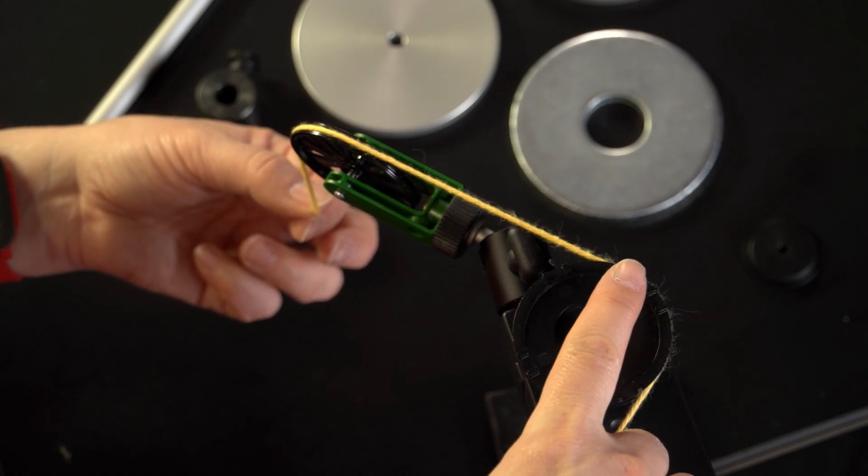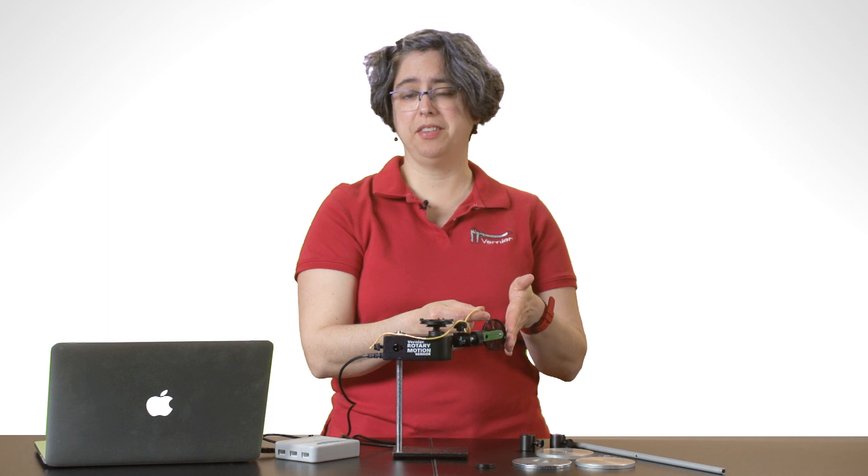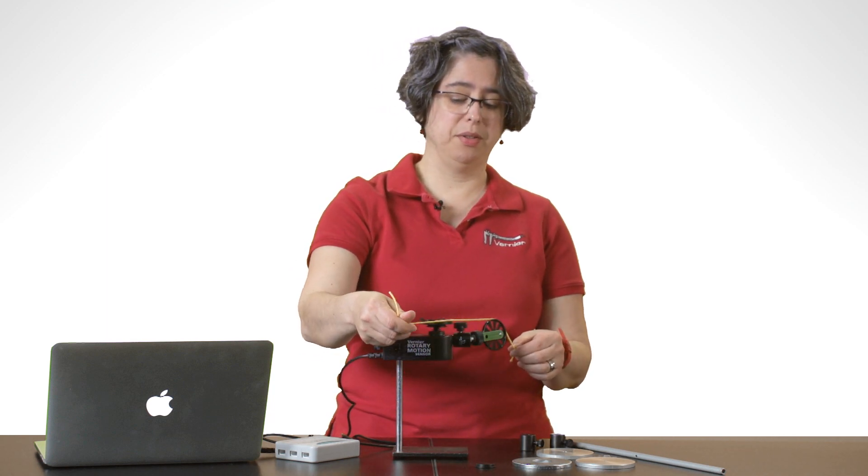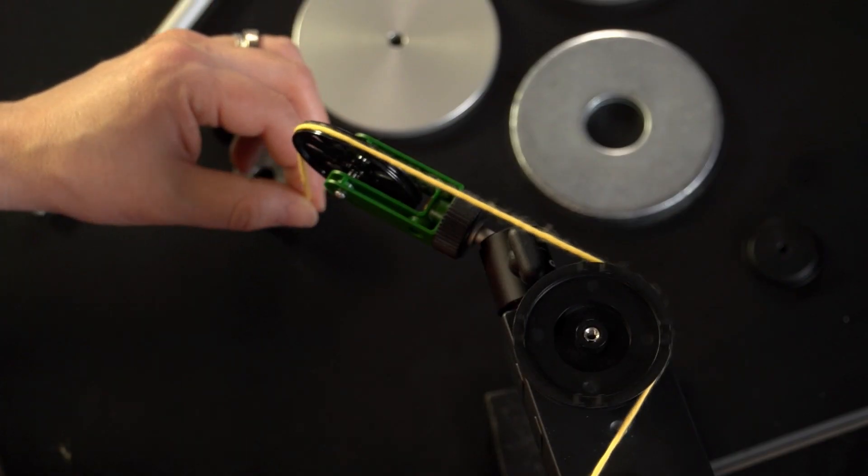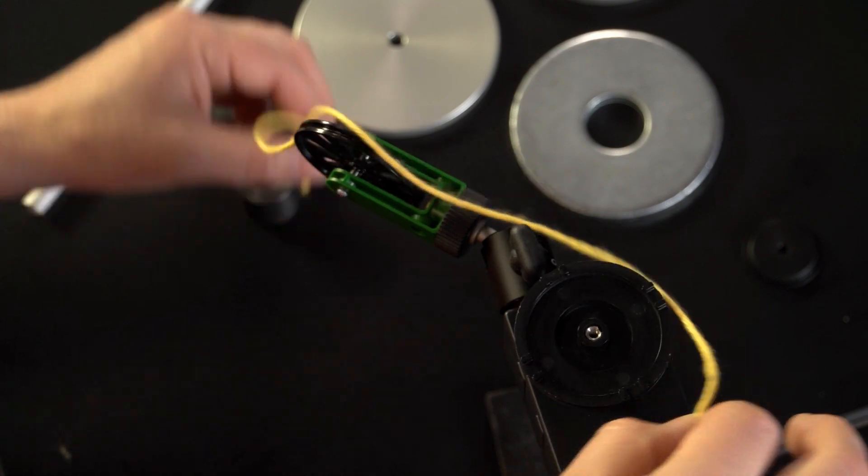And there we are. So now I know that if I have a mass on a string that goes over this pulley, it's going to not only stay on the pulley but provide a nice tangential torque in the positive or counterclockwise direction on my sensor.